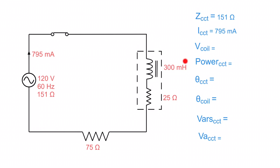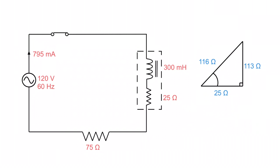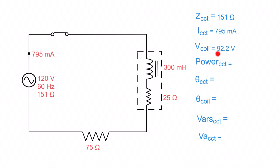Now let's find the voltage across the coil. We already worked out an impedance triangle just for the coil: 25 ohms of coil resistance and 113 ohms of reactance. Using the Pythagorean theorem, that gives 116 ohms of impedance for the coil alone. Then we multiply the constant current by the coil's impedance: 0.795 times 116 ohms gives 92.2 volts across the coil.